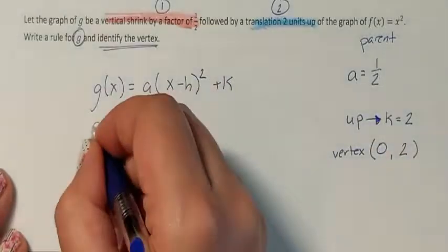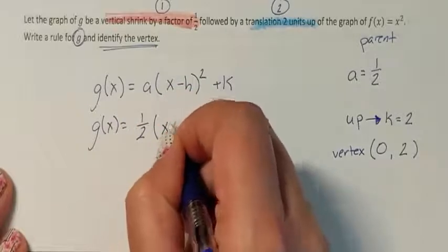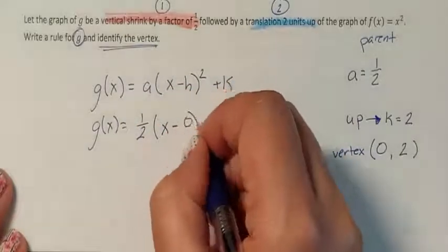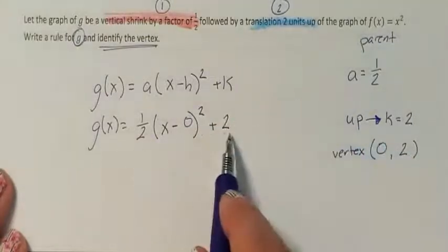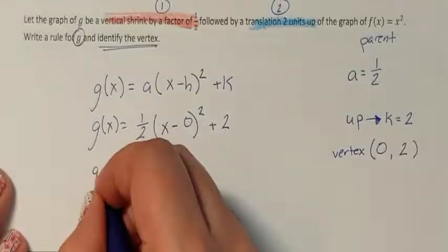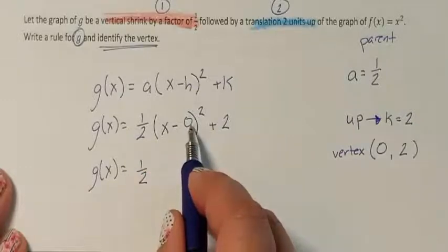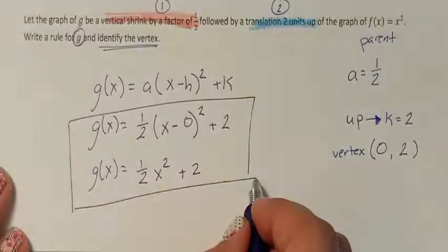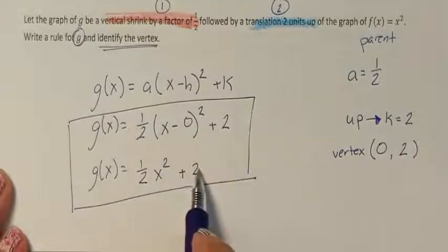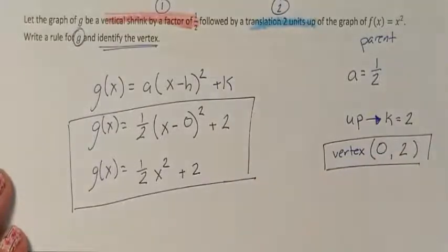I found a and k, and h is 0 since there was no other change. Now vertex form: g(x) = a(x − h)² + k. So g(x) = (1/2)(x − 0)² + 2. You could leave it in vertex form, or simplify: g(x) = (1/2)x² + 2. Both are the solution — one is vertex form, one is the simplified version. The problem asked us to find the vertex: (0, 2). We are done.